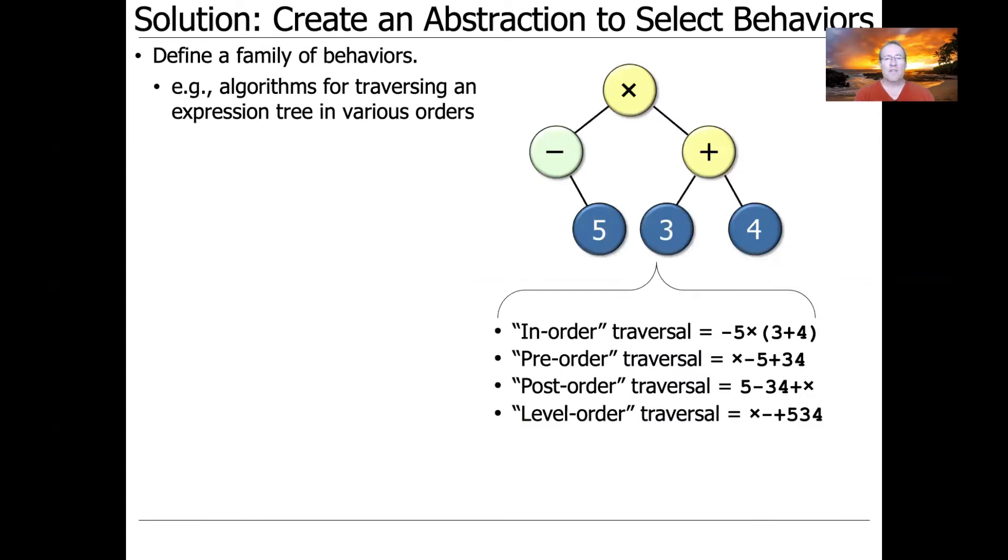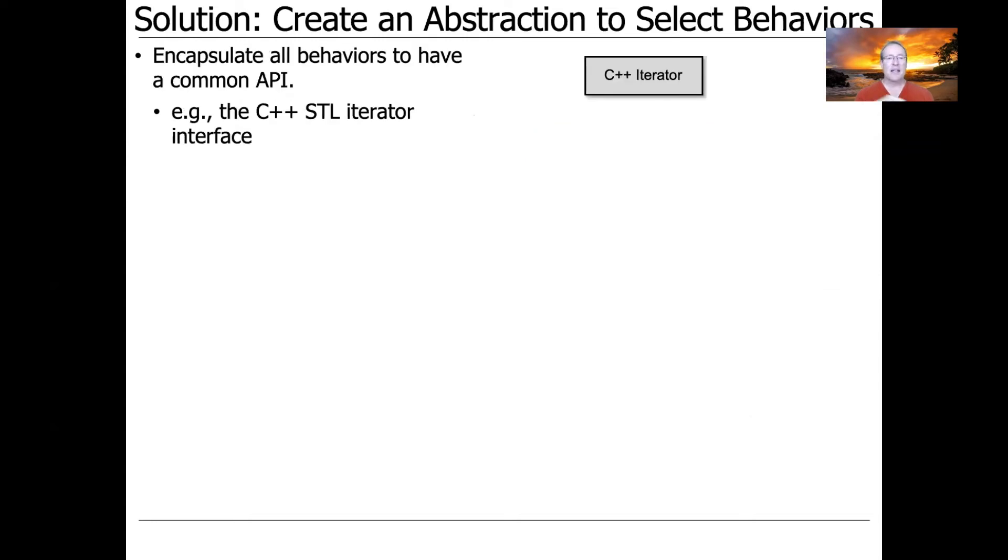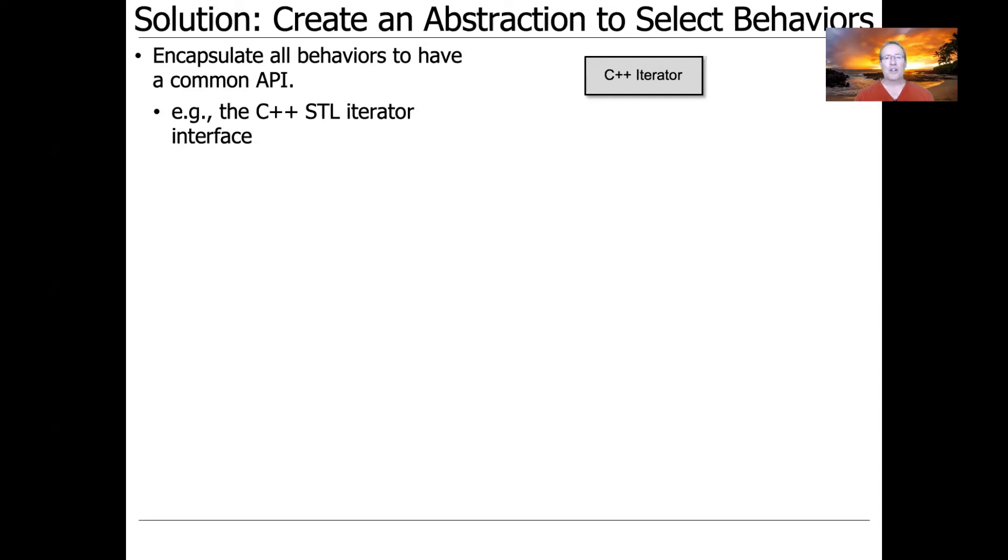So what we're going to do is we're going to define a family of behaviors. For example, we want to have a family of algorithms for traversing an expression tree in various orders, as we've seen here multiple times now. What we're going to do is we're going to encapsulate all these behaviors behind a common API, and the common API, of course, is going to be the STL iterator interface with plus plus and not equal and equal and dereference and so on.